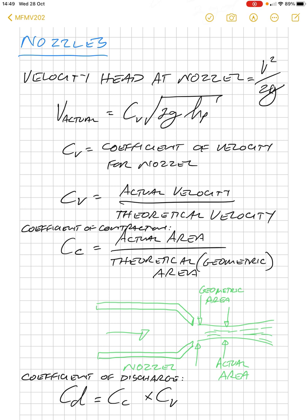Then, the fluid actually contracts before it starts expanding again. So, the minimum area would be the actual area, or the minimum area that you divide by the theoretical, geometric, or nozzle area, to get your coefficient of contraction.